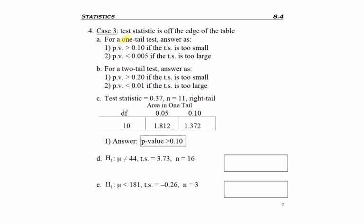So if you're dealing with a one-tail test, you only have one of two answers. Your p-value is greater than 0.10, or your p-value is less than 0.005. And this explains when that would be the case, but really, I don't memorize that. I just kind of look for what's happening on the table.